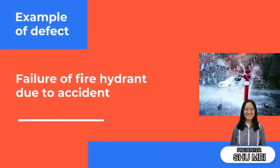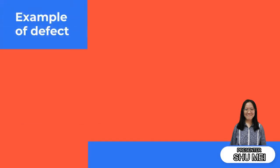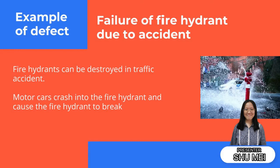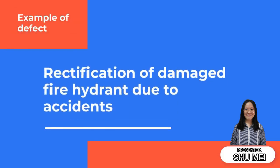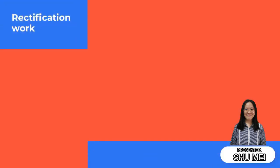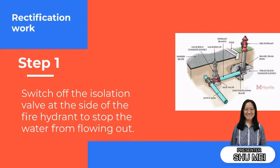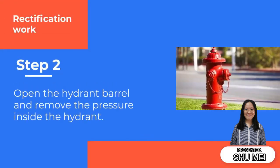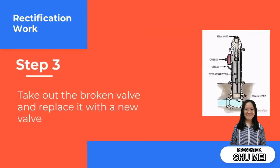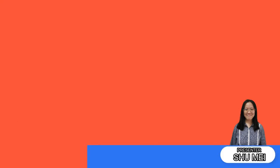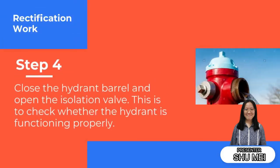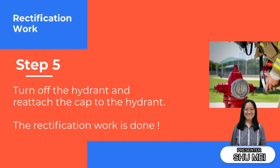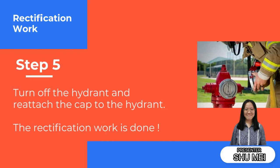Failure of a fire hydrant due to accident. Fire hydrants can be destroyed in a traffic accident when motor cars crash into the fire hydrant and cause it to break. Rectification of a damaged fire hydrant due to accident: Step 1 — switch off the isolation valve at the side of the fire hydrant to stop water from flowing out. Step 2 — open the hydrant barrel and release the pressure inside the hydrant. Step 3 — take out the broken valve and replace it with a new valve. Step 4 — close the hydrant barrel and open the isolation valve to check whether the hydrant is functioning properly. Finally, turn off the hydrant and reattach the cap. The rectification work is done.